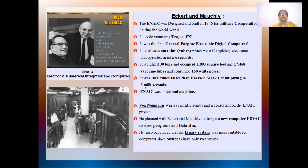Harvard Mark 1 multiplied in three seconds, and the ENIAC — Project PX — could do the work in three milliseconds. So ENIAC is the name of the designed computer, and it is also called a decimal machine, which could do even decimal calculations.